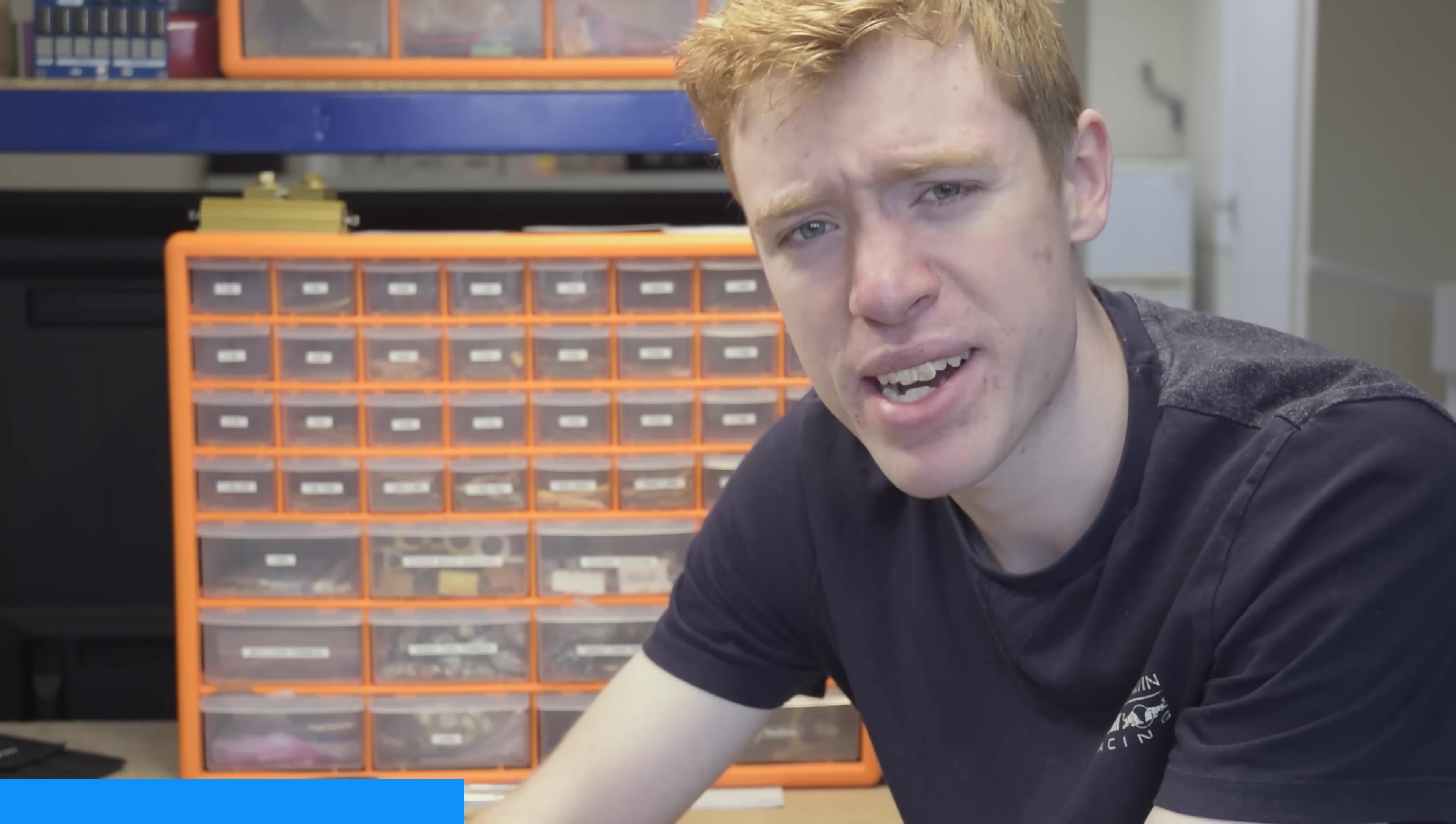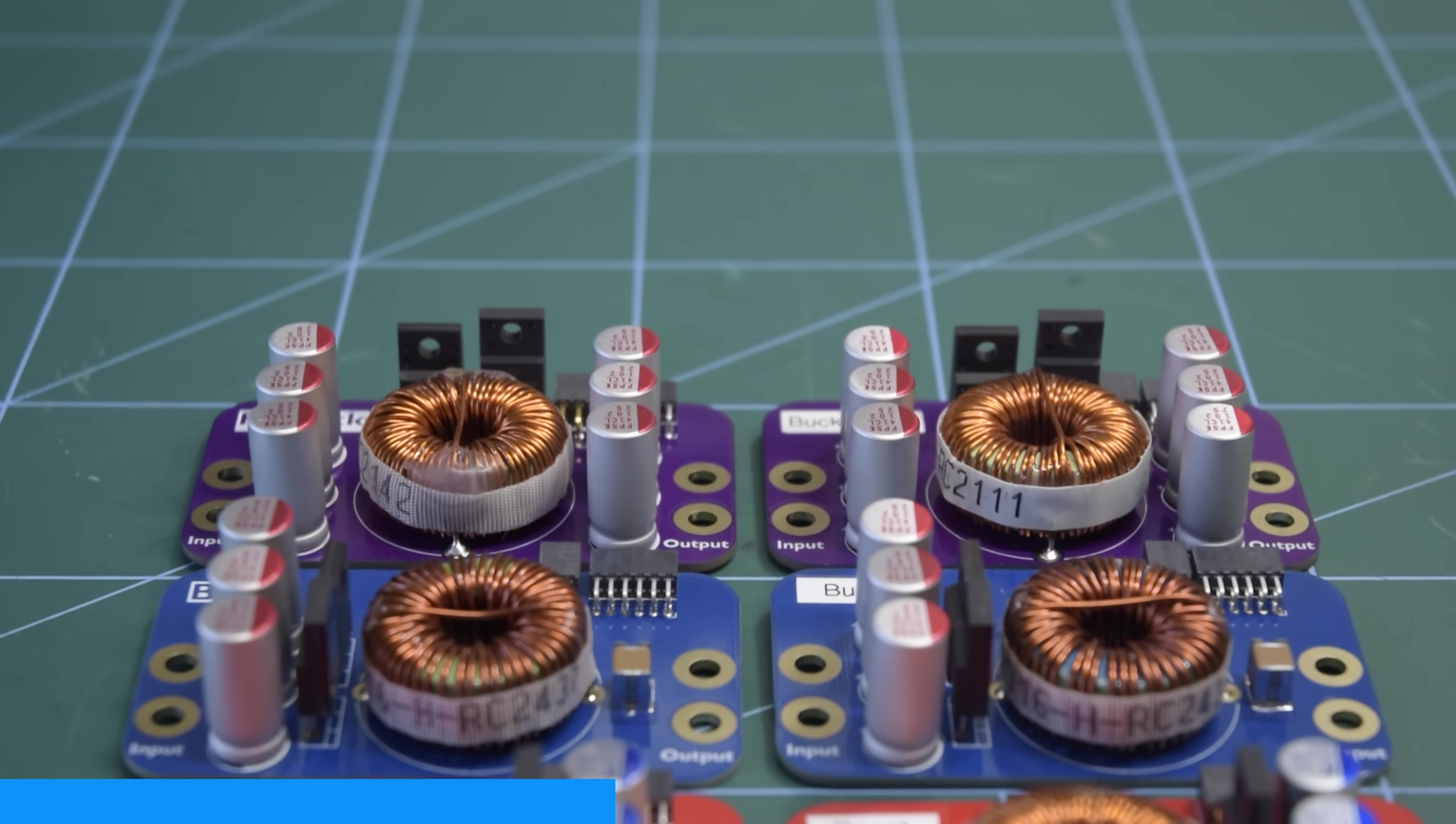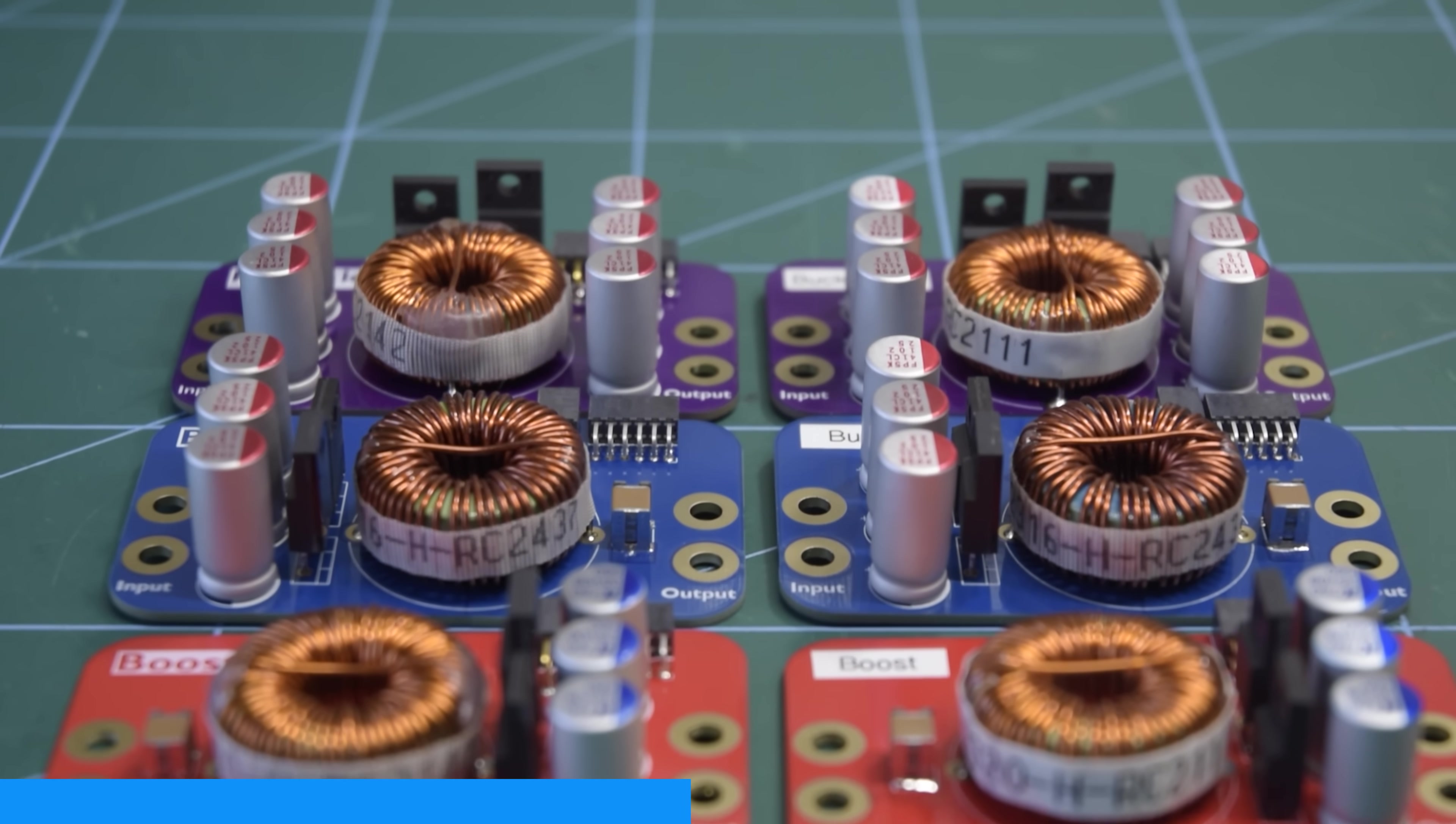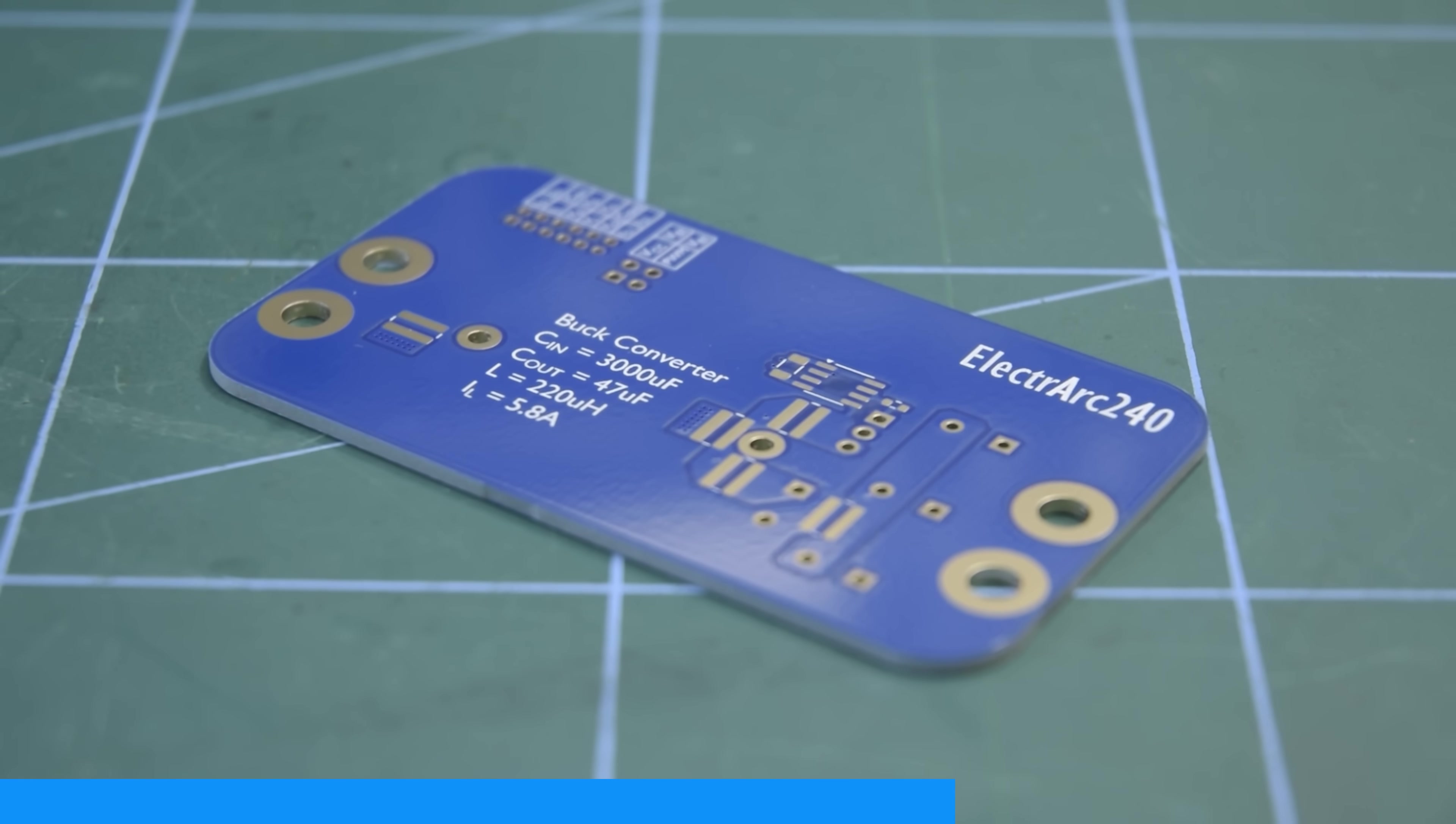Now if this video inspires you to make your own DC to DC converter, and hopefully it does, make sure to head over to JLCPCB. With prices for two layer boards starting at less than two quid, you'll definitely have plenty of cash left over for some nice components. I've got quite a few boards made for this series of videos on DC to DC converters, and they all look marvellous. Especially with the ENIG gold plated finish, which I highly recommend, if not for the superior quality then at the very least for the bling factor.